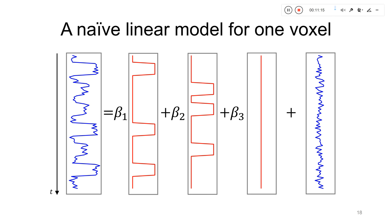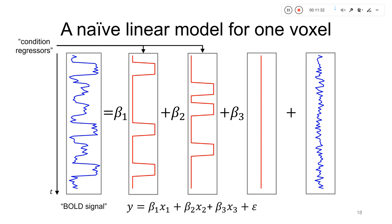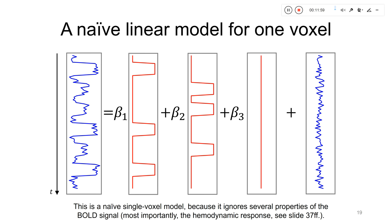The model is summarized as: y = beta1·x1 + beta2·x2 + beta3·x3 + epsilon. Here, y is the BOLD signal; x1 and x2 are the experimental condition regressors (stimulus functions indicating condition presence); x3 is the implicit baseline or constant regressor; and epsilon represents the errors or noise terms. This is a naive model for a single voxel because it ignores several important properties of the BOLD signal shape.